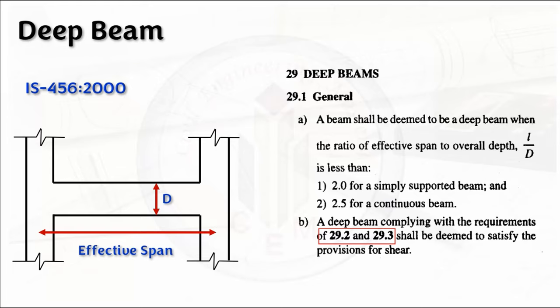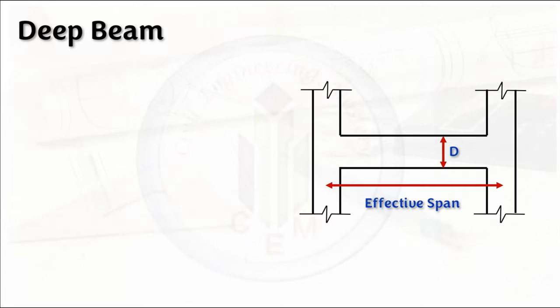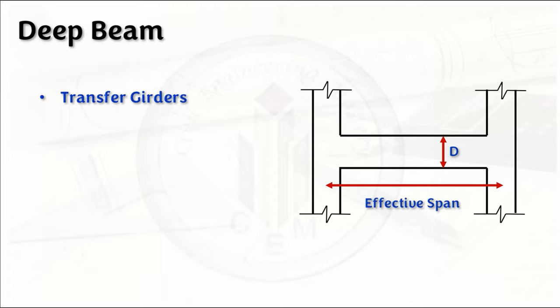In clauses 29.2 and 29.3, lever arm and the reinforcement details for the deep beam are given, which we will discuss later. Looking into the applications of deep beams: they can be used as transverse girders, which are beams used to transfer load from one part of the structure to another. Deep transfer girders are often used in bridges and buildings to carry heavy loads over short spans.